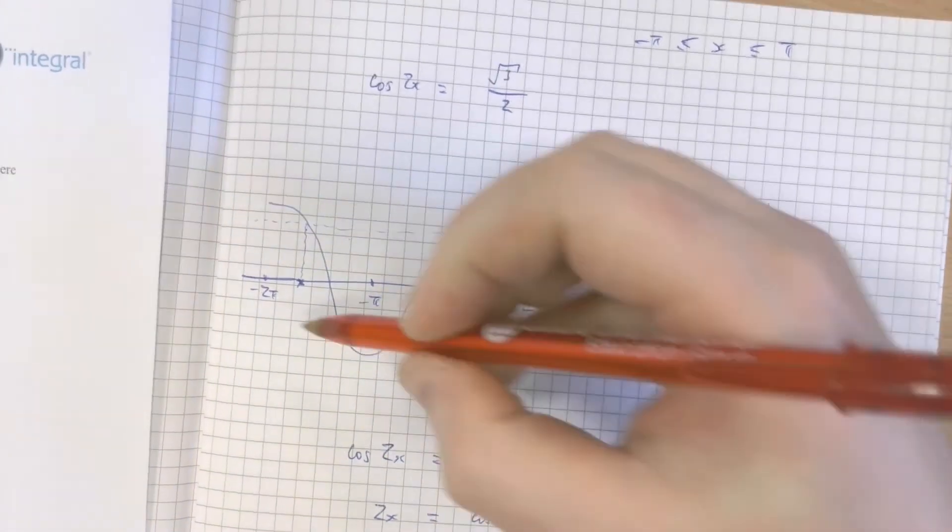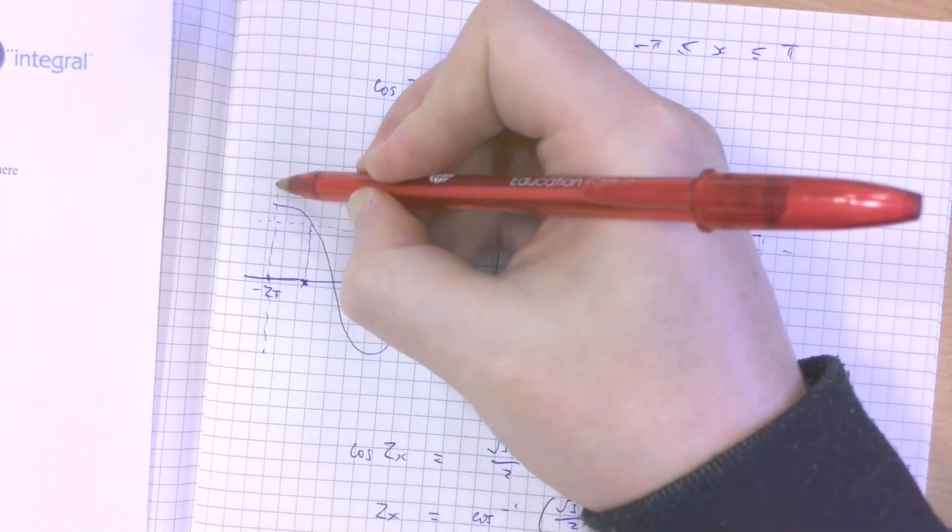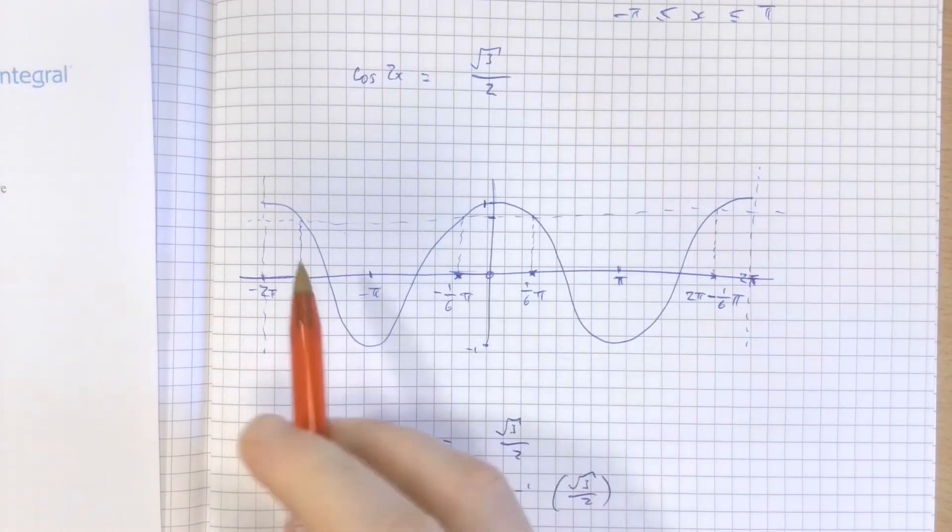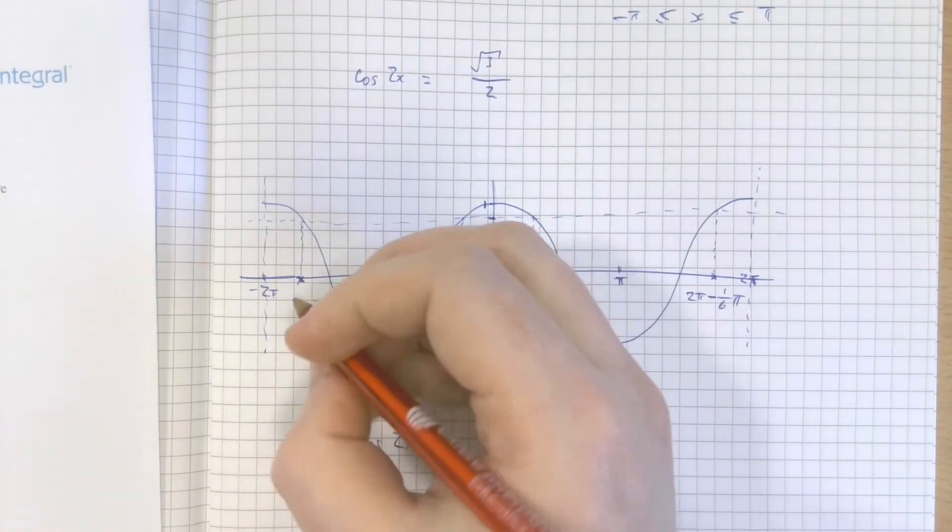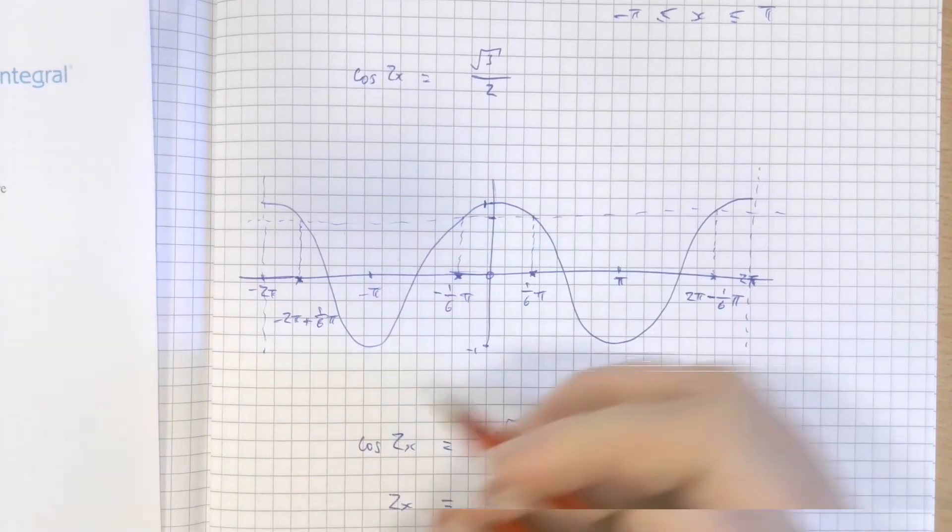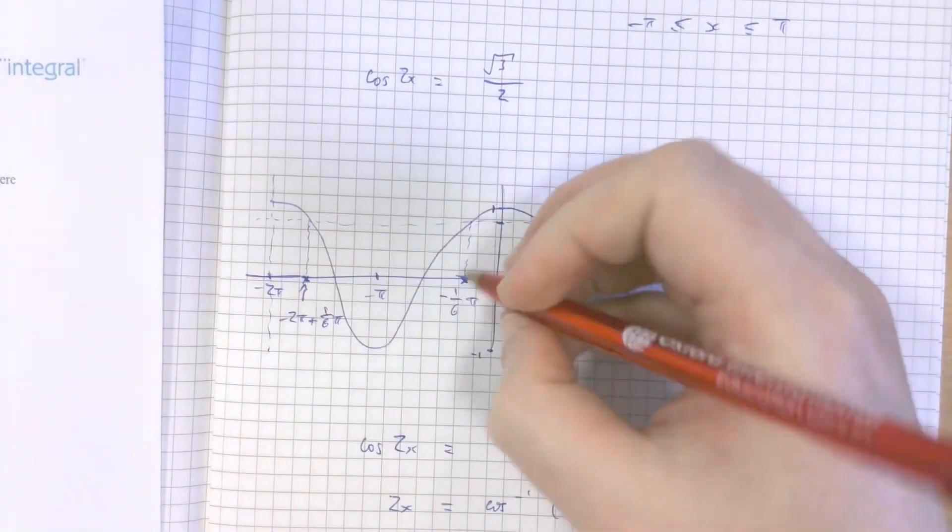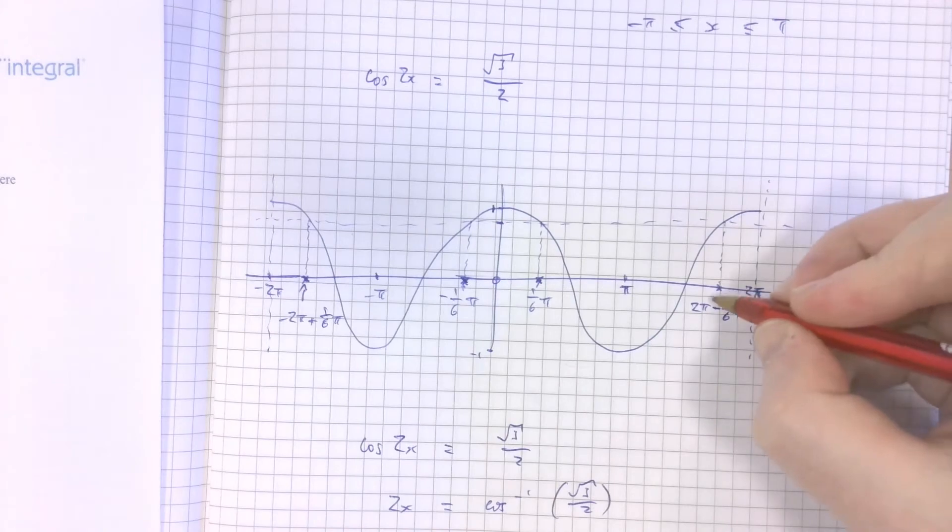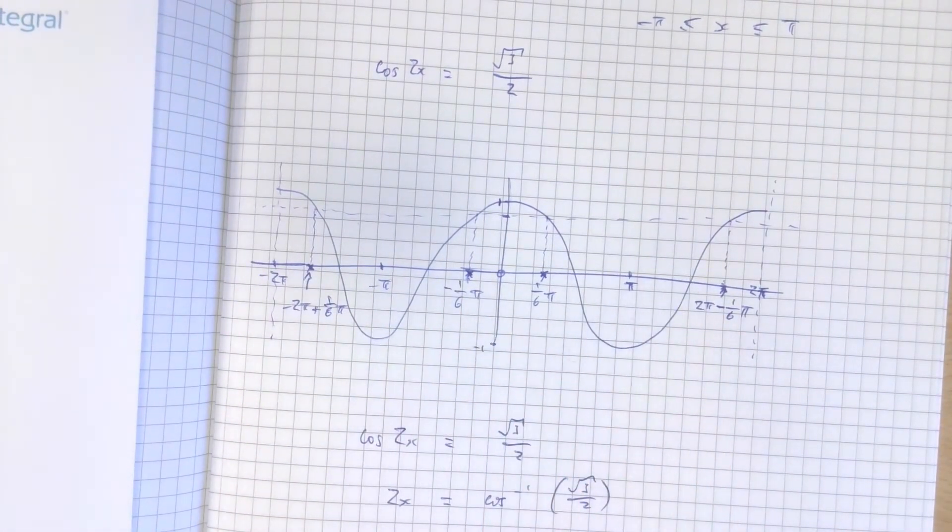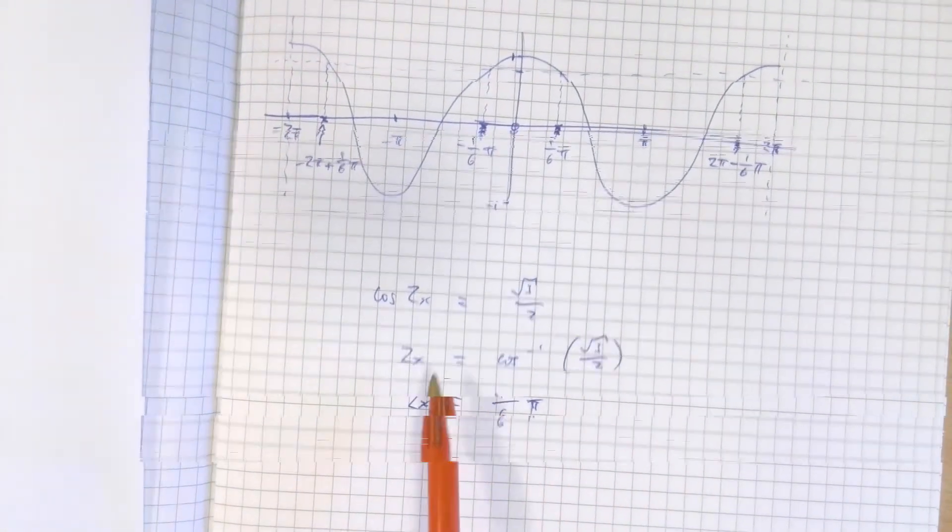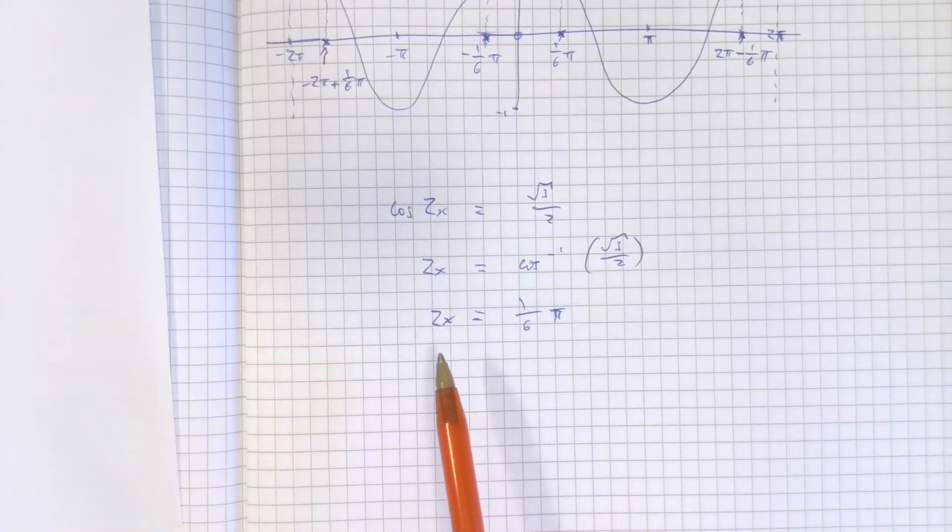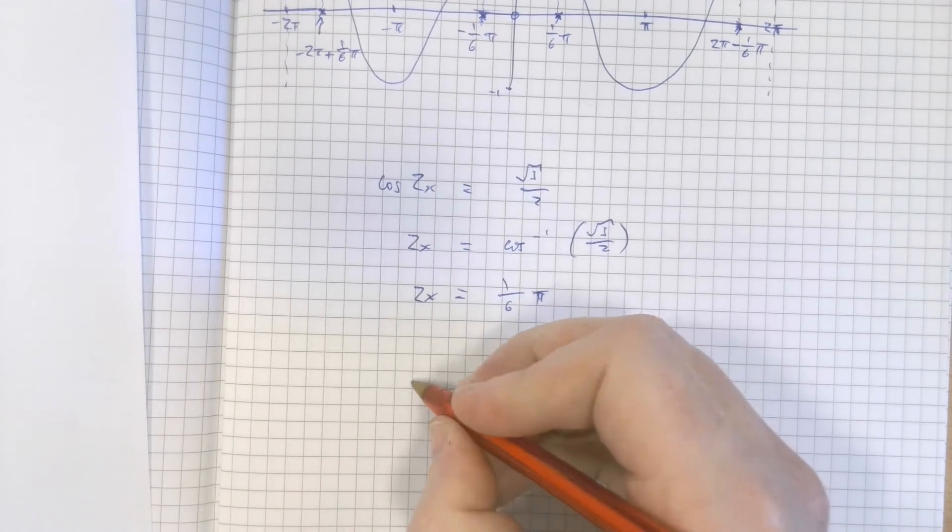And similarly, if I were to imagine there being a y-axis over here, there's a gap of π/6 to get from 2π to this point. So this solution here is 2π minus π/6. And then similarly over here, the distance between negative 2π and this point is minus 2π plus π/6. So I can find all four values simply through having done a little bit of algebra. Now, of course, that's the value of 2x.